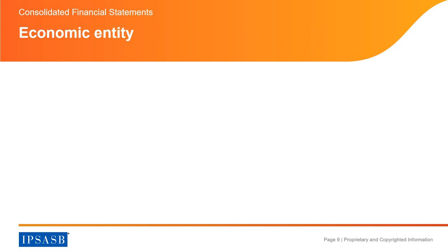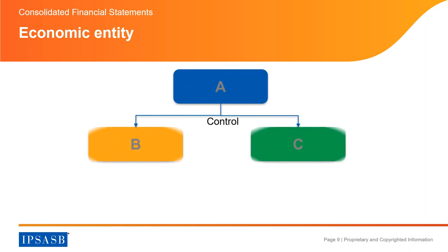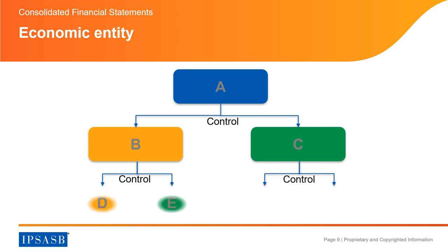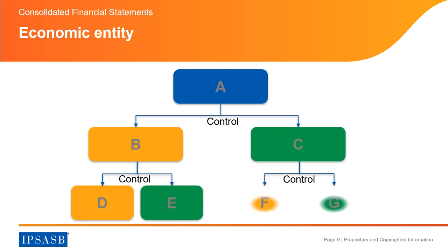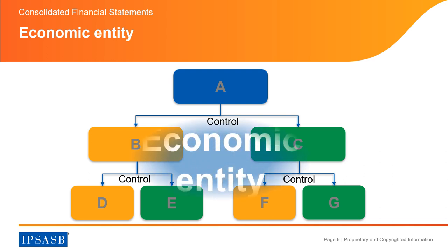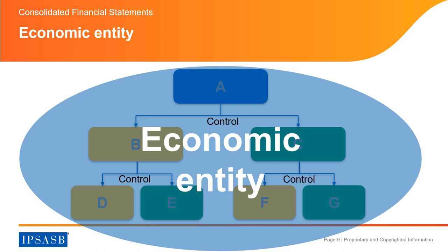To better understand how the concept of control applies in practice and its relationship with the concept of economic entity, consider the following example. Entity A controls entities B and C. Entities B and C control entities D and E, and entities F and G respectively. The economic entity A encompasses the controlling entity and its controlled entities.